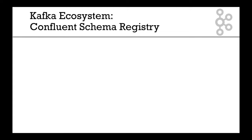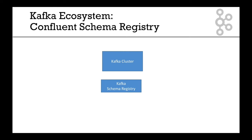So now we have the Confluent Schema Registry — where does it fit? We have our Kafka cluster, and below it we have our Kafka Schema Registry. Now our Java producers produce Avro data, and they will go ahead and register the schema with the Kafka Schema Registry. We'll go over what that means when we get to the section on the Schema Registry. Just remember at a high level right now what this is — this is just an intro.